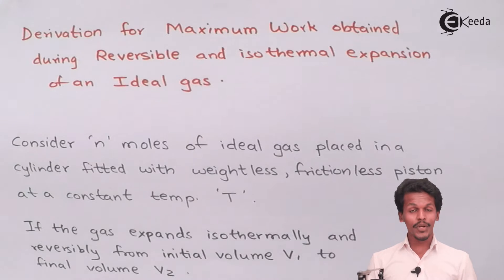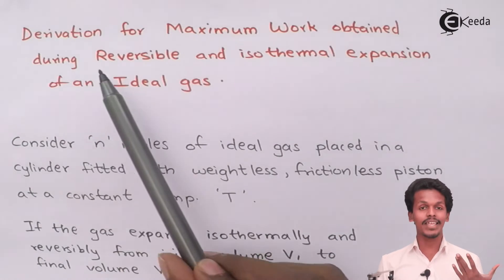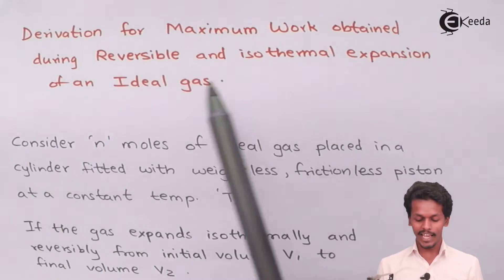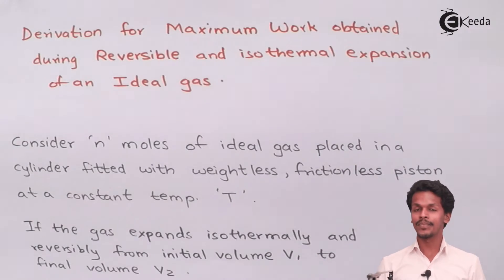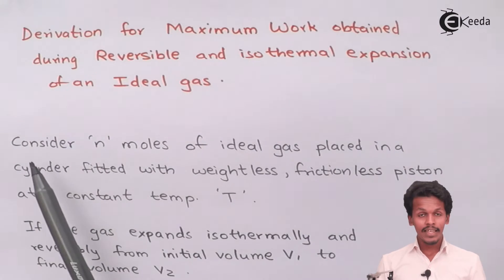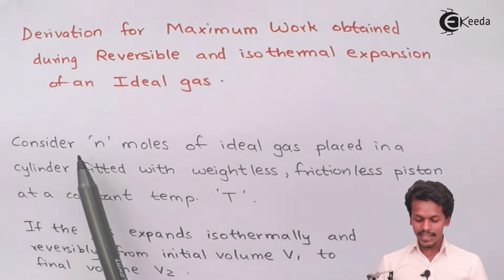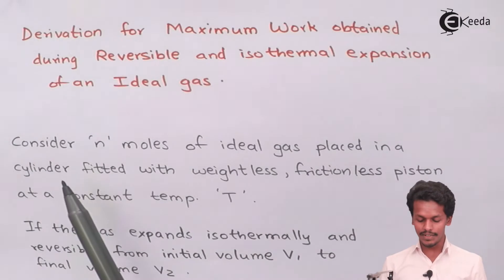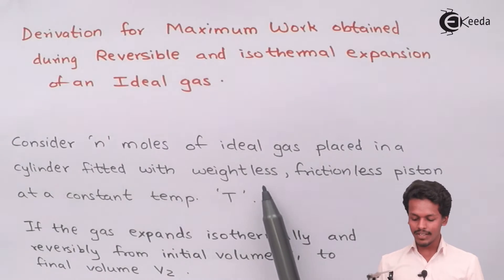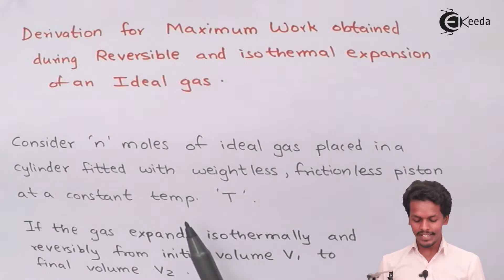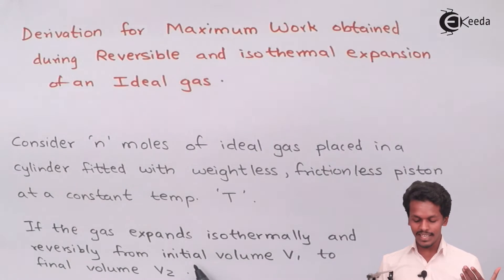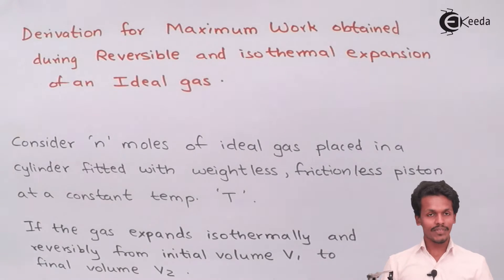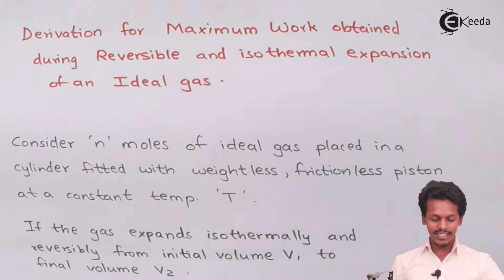We are going to talk about the derivation for maximum work obtained during reversible and isothermal expansion of an ideal gas. For that, let us consider n moles of ideal gas placed in a cylinder fitted with a weightless, frictionless piston at a constant temperature T. The gas expands isothermally and reversibly from initial volume V1 to final volume V2.